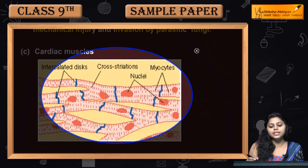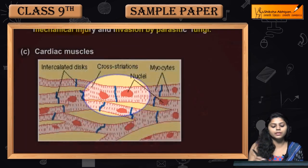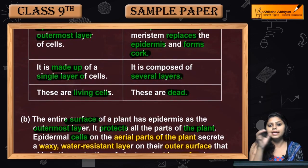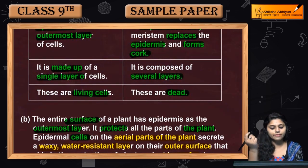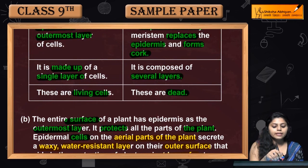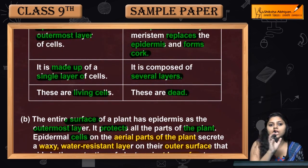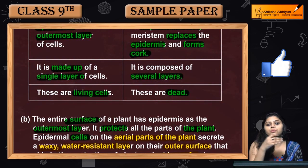So we saw the difference between epidermal cells and cork cells: epidermal cells are the outermost layer, and cork cells replace the epidermal layer. Epidermal cells are living; cork cells are non-living. Epidermal cells are made of a single layer of cells; cork cells have multiple layers. Epidermal cells are called protective tissues because they provide protection — being the outermost, they prevent harmful substances from entering.